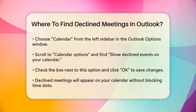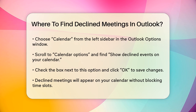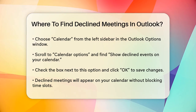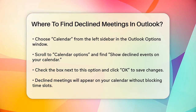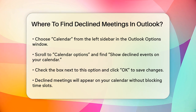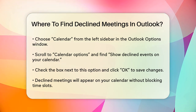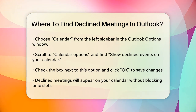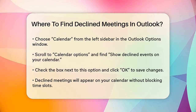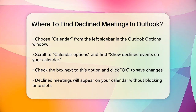Now, any meeting you decline will still appear on your calendar, but the time slot will remain available for other appointments. This way, you can easily see the details of the meeting you declined without cluttering your calendar.